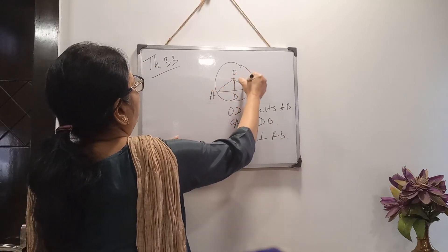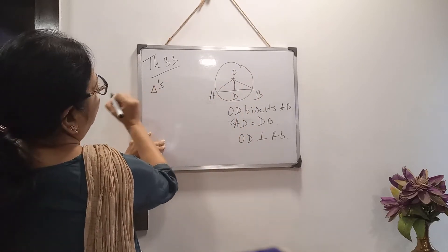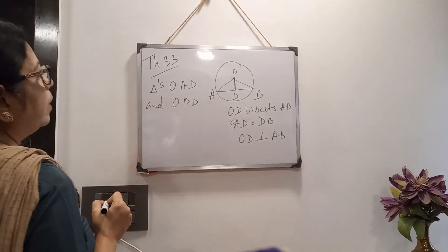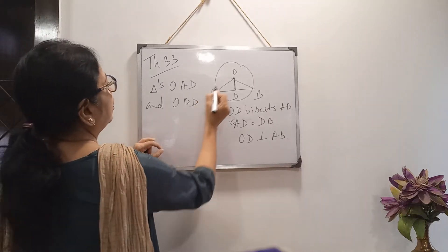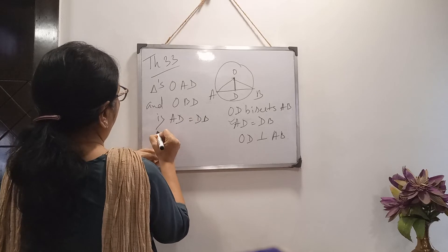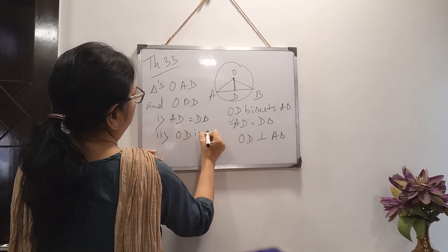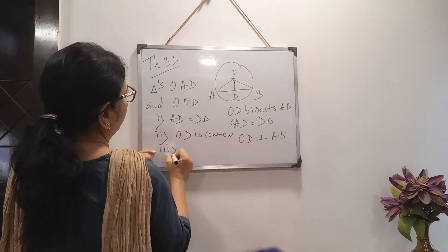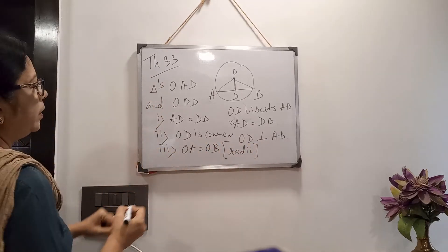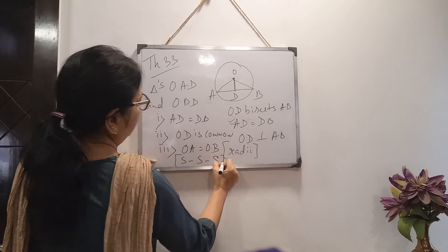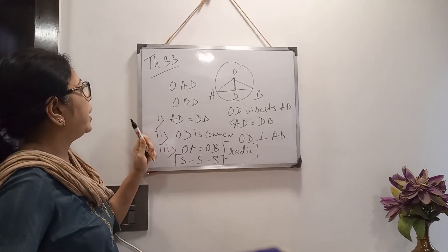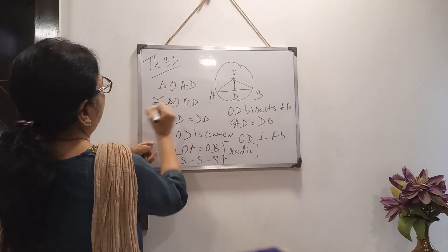Same construction: we join OA and OB, which are radii. We take triangles OAD and OBD. To prove congruency: AD equals DB — given; OD is common in both triangles; OA equals OB — both radii. So by Side-Side-Side congruency, we can say triangle OAD is congruent to triangle OBD.